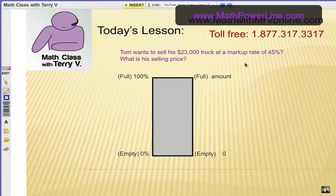Here's an example. Tom wants to sell his $23,000 truck at a markup rate of 45%. What is his selling price? Let's add on to this container. The markup rate is 45%, which gets added on. So you really are selling it for 145% of its original cost.